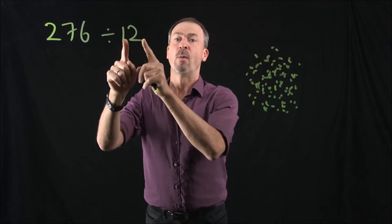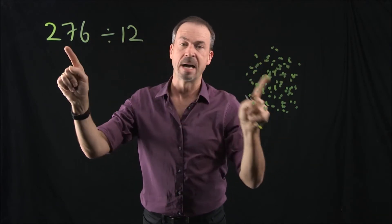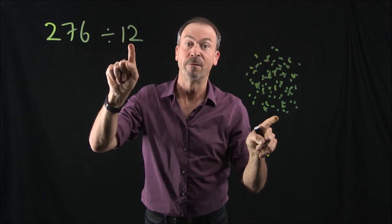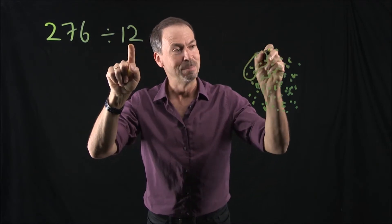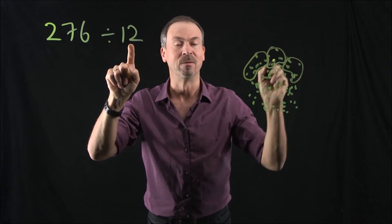Alright, so what's division? We're asking how many groups of 12 can we find in a picture of 276. Looking for groups of 12. So maybe there's a group of 12, maybe there's a group of 12, there's a group of 12, and so on.